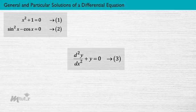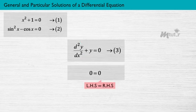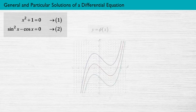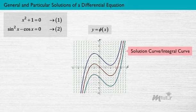In contrast to the first two equations, the solution of this differential equation is a function φ that will satisfy it. That is, when the function φ is substituted for the unknown Y in the given differential equation, the left-hand side becomes equal to the right-hand side. The curve Y = φ(X) is called the solution curve, or the integral curve, of the given differential equation.